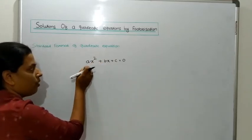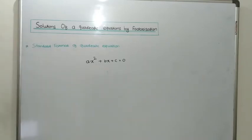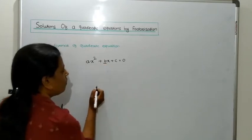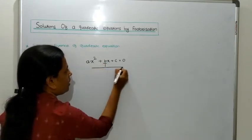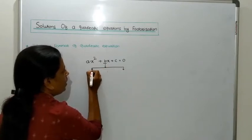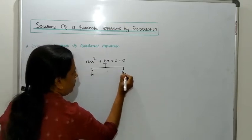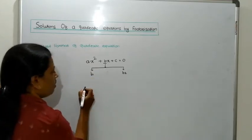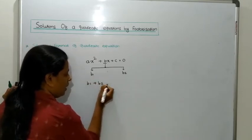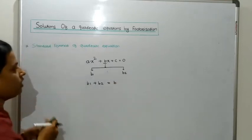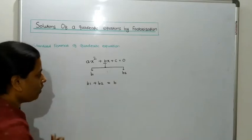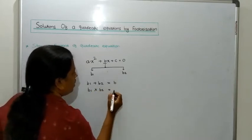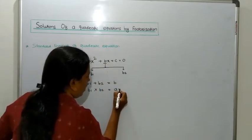Any quadratic equation is in the form of A x squared plus Bx plus C. When we calculate the factors of the quadratic equation, we have to consider B. This B is factorized into 2 parts, that is B1 and B2, in such a way that when we add B1 and B2 we get B, and when we multiply B1 with B2, the result is A into C.